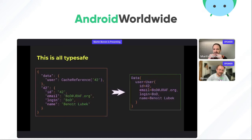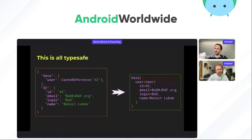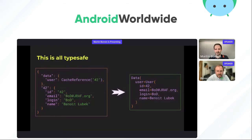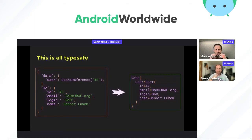As Martin said, in the normalized cache everything is stored as maps, but thanks to the type safety and type information built into GraphQL and your API schema, a library is able to reconstitute your data into strongly typed models — like data classes on the right here. That's one of the important aspects of GraphQL: there's a lot of type information you can access and build powerful tooling around.